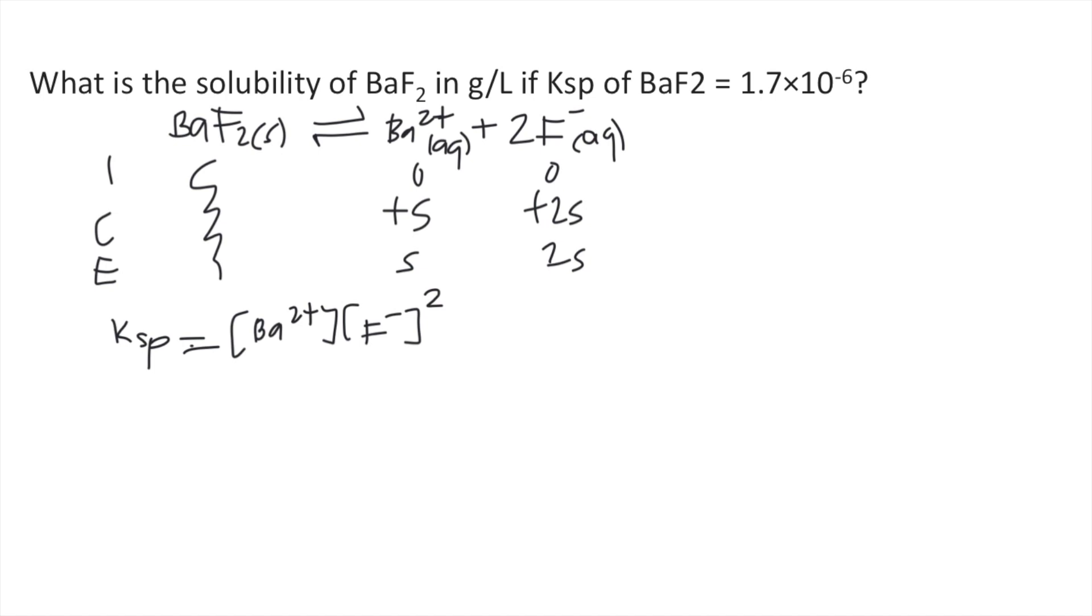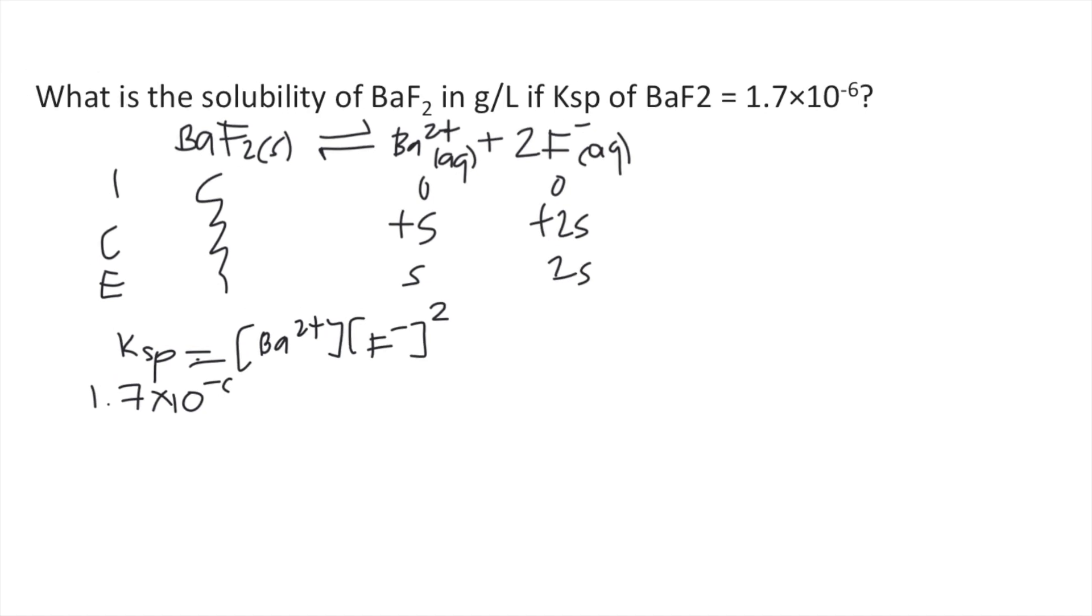Next is to substitute the numbers. For Ksp, that's 1.7 times 10 to the negative 6. For barium 2+, that's S. For F⁻, that's 2S squared. So on the left side, we have 1.7 times 10 to the negative 6. On the right side, S times 2S squared. That's 4S cubed.